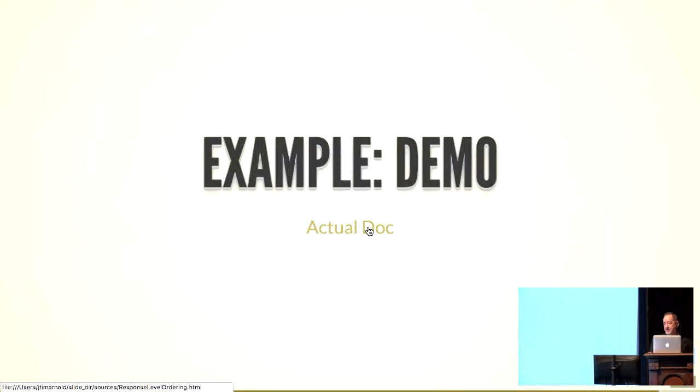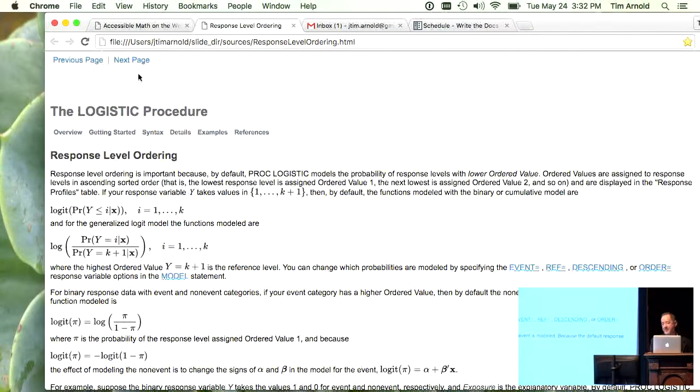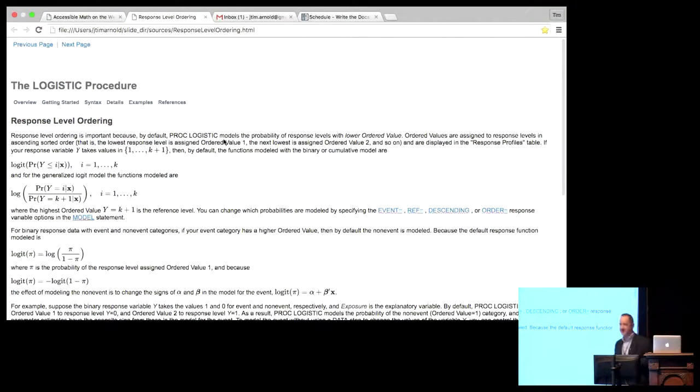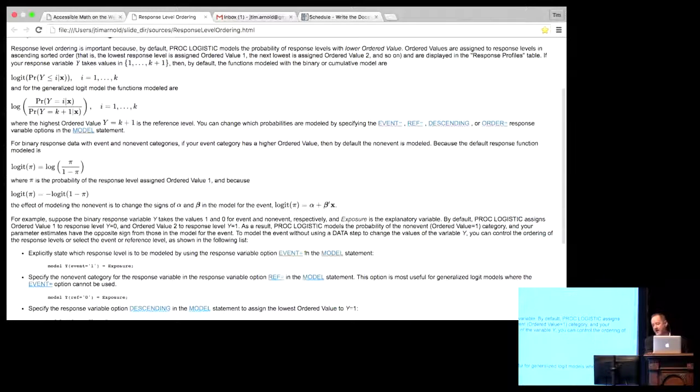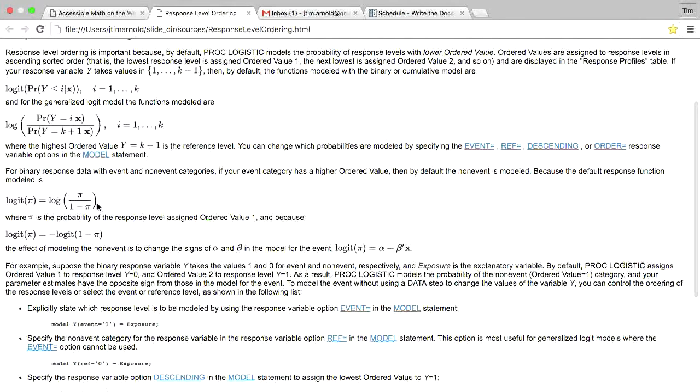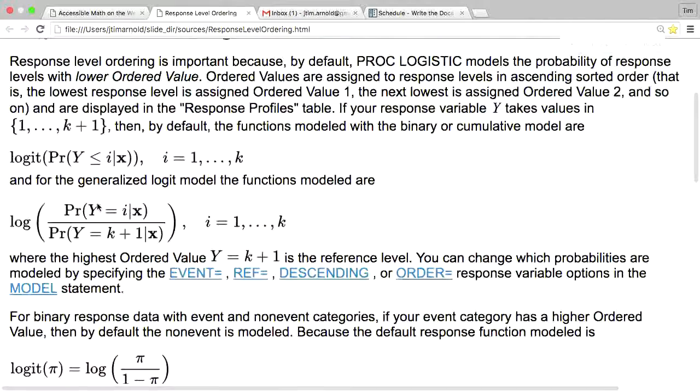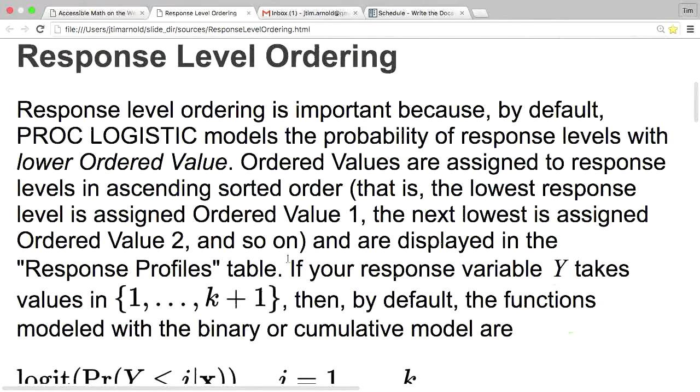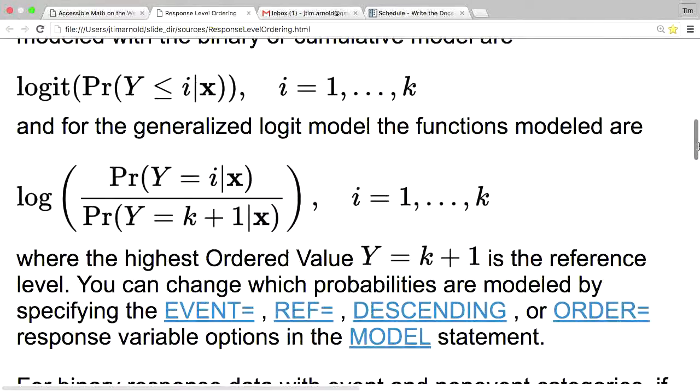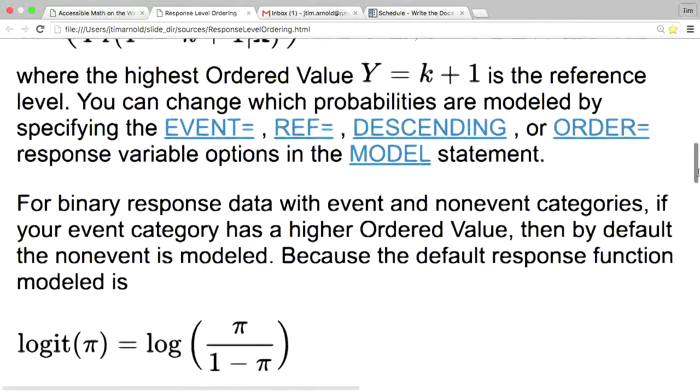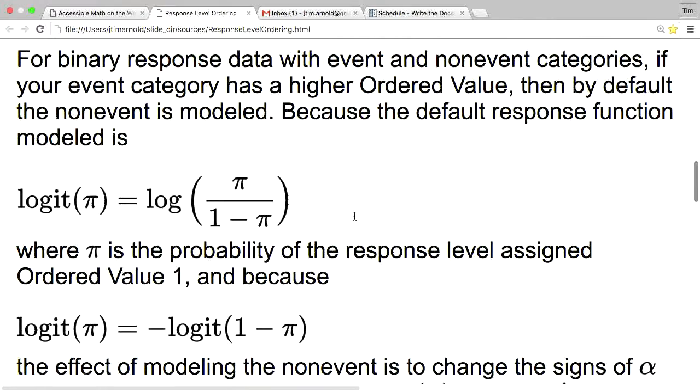So here is an example. This is an example from real SAS documentation for the logistic procedure. You see there's a good bit of math on here. And right here is the equation we've been looking at. Let me just zoom that up. Let me just get it really zoomed up there. And you can see all of the math on this page, it's the same thing. It's built in the same way. There's the equation we've been looking at, the logistic equation. But every piece of math on that page is the same thing. It's SVG, it's got the MathSpeak of itself embedded into it. And each one of these is a link.